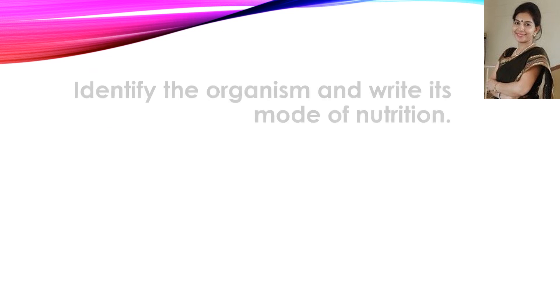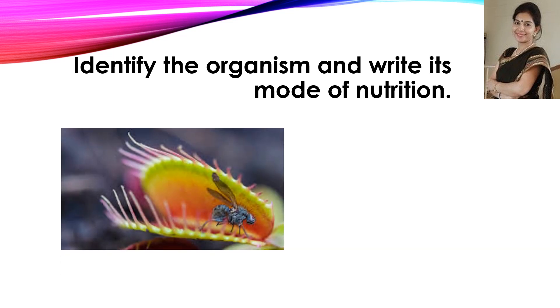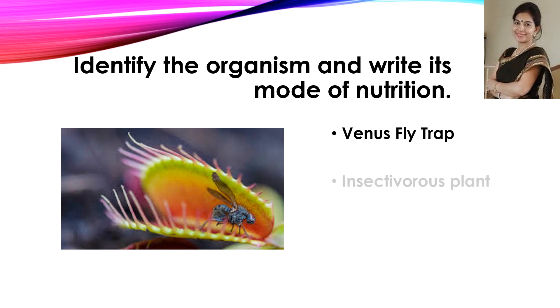Now the next question: identify the organism and its mode of nutrition. This is Venus fly trap, and the mode of nutrition is insectivorous.